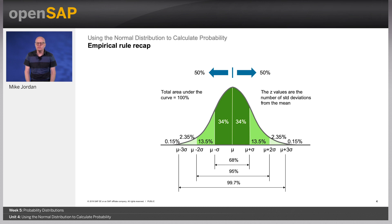Every normal distribution, regardless of its mean or standard deviation, conforms to the following rule. About 68% of the area under the curve falls within one standard deviation of the mean. About 95% of the area under the curve falls within two standard deviations of the mean. And about 99.7% of the area under the curve falls within three standard deviations of the mean. This is known as the empirical rule, or the 68-95-99.7 rule.